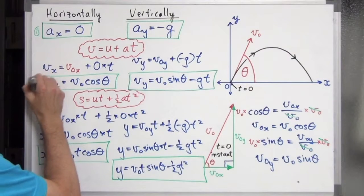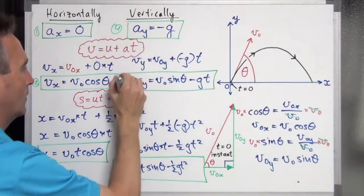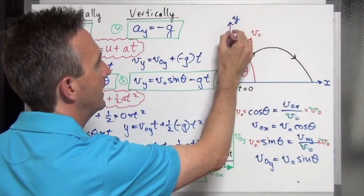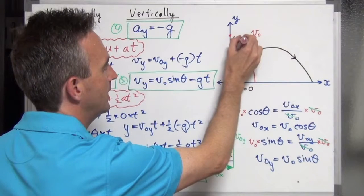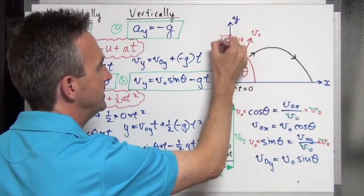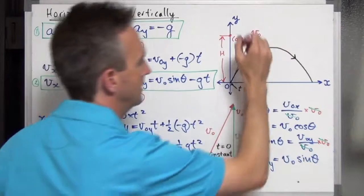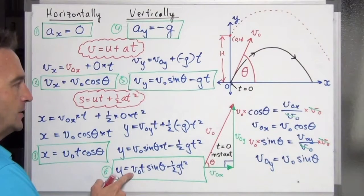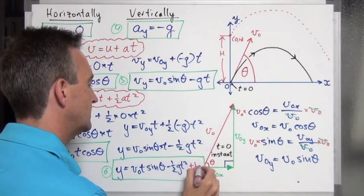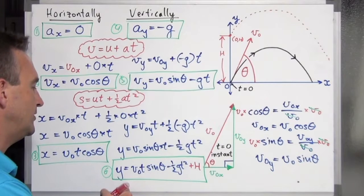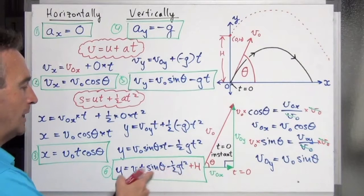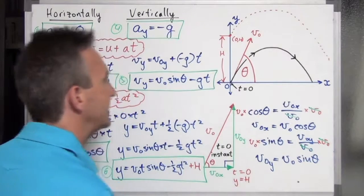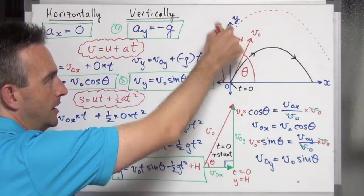Let's number all six equations: 1 through 6. One situation that may come up is a projectile fired from a cliff of height h. In that case, the sixth equation changes and becomes y = v0·t·sin θ − ½g·t² + h. You can verify this: when t = 0, both the velocity and the squared terms disappear, leaving y = h, which is exactly where the projectile starts — at the top of the cliff.